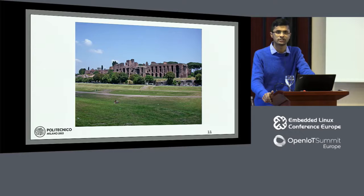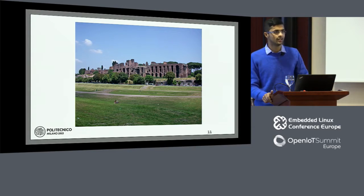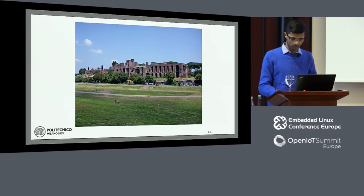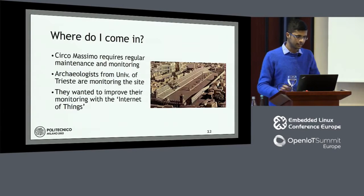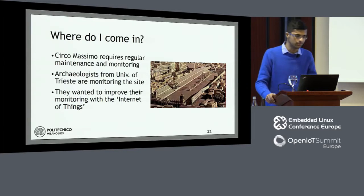This is Circo Massimo, a heritage site in Rome. The chariot race scene from Ben-Hur was shot at this actual location. This place is currently in ruins, and there are archaeologists from the University of Trieste who are monitoring the site. They came to us to improve their monitoring with the help of the Internet of Things.